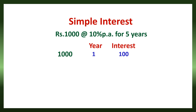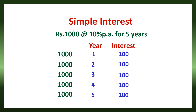In the second year, again, he has to pay interest on Rs. 1000 at 10%. Again, the interest is 100. After the third, fourth, and fifth year, same — the principal amount is 1000, rate is 10%, so the interest is 100. Every year, interest is calculated on the principal amount. The rate does not change, and the amount on which interest is calculated does not change. So, the interest amount remains the same until the repayment.